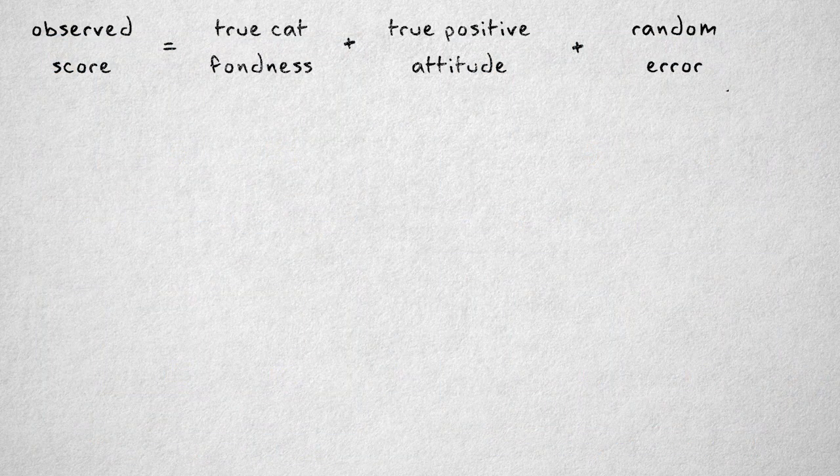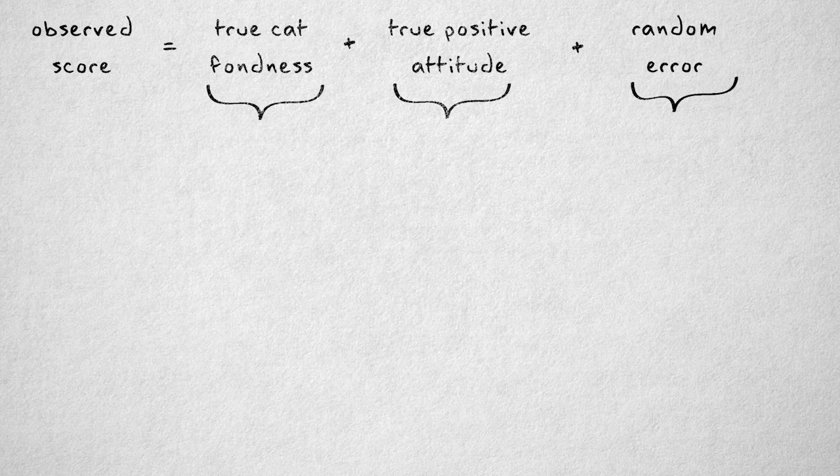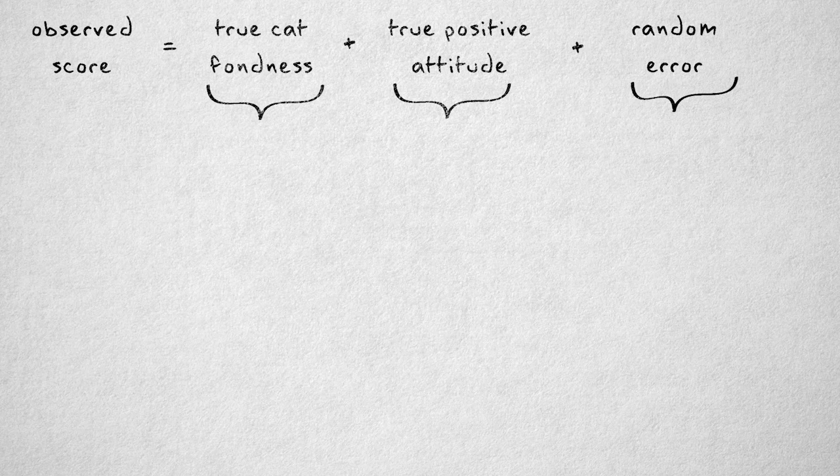Of course, the trick is to separate all these error components from the true score, even if there is a fair amount of systematic and random error. Psychometricians and sociometricians aim to do this by using statistical modeling to partial out the random and systematic error.